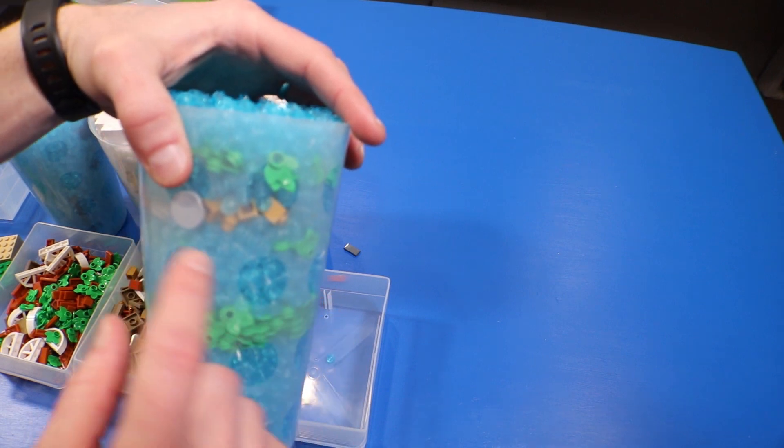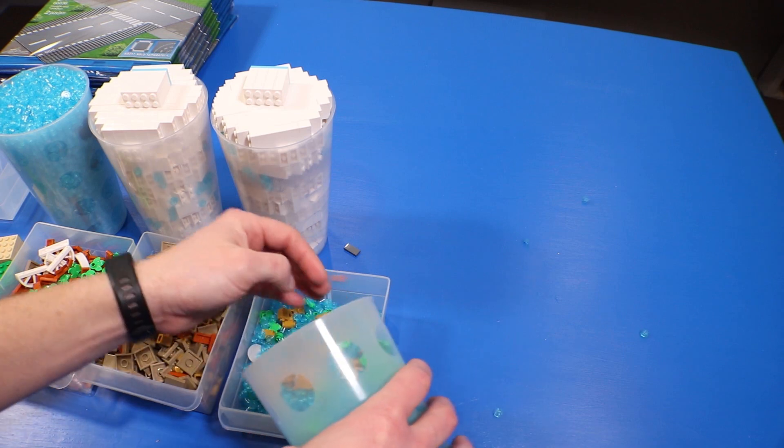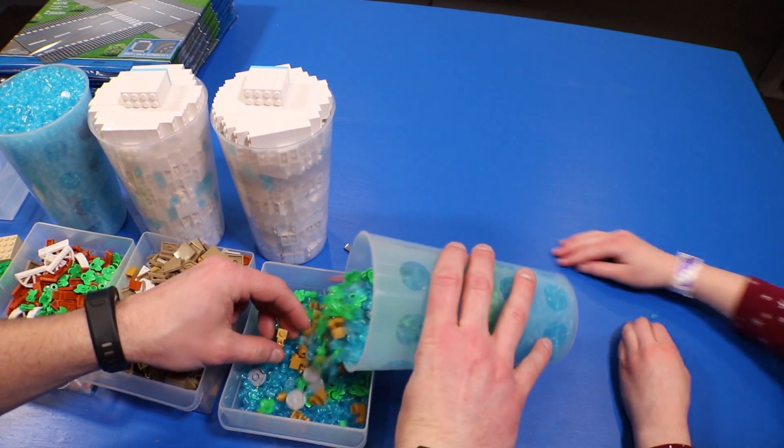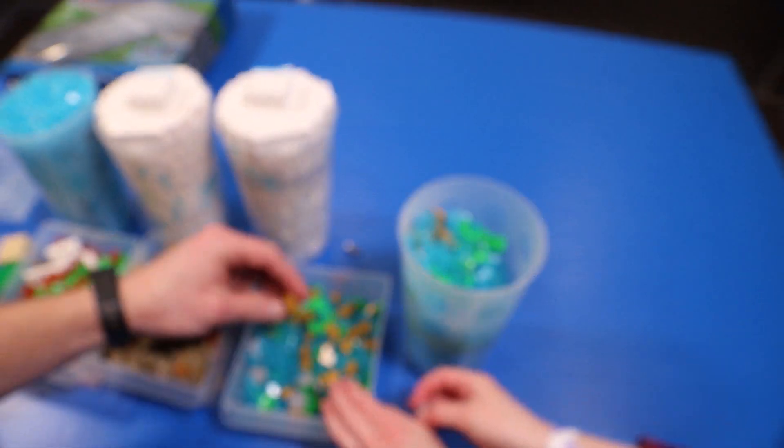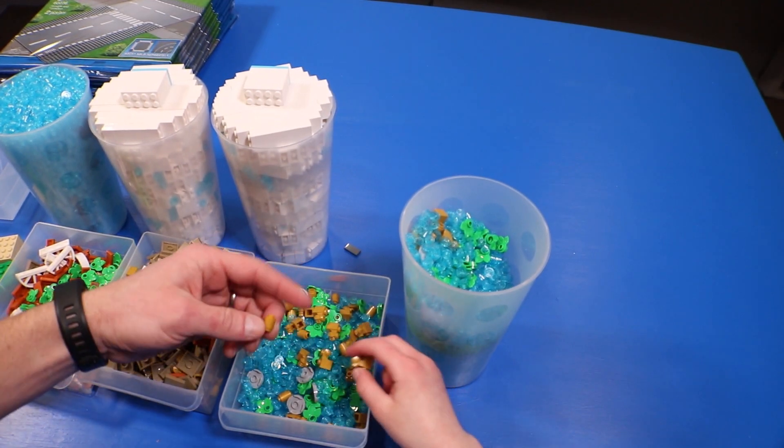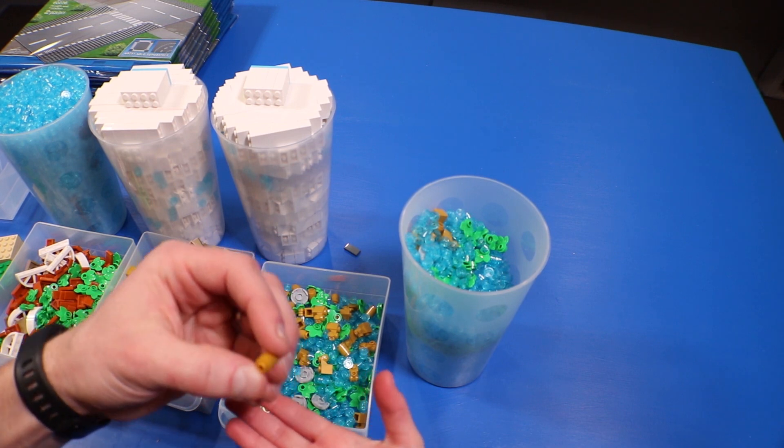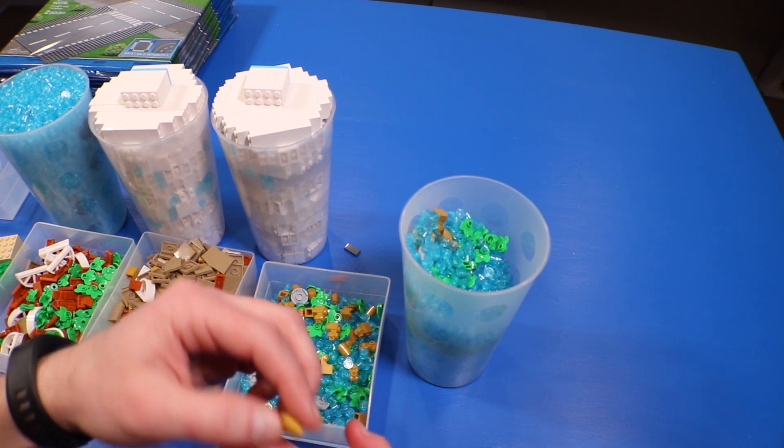So we've got the blue one by ones and we've got some green leaves, we've got a few other different layers in there. So here, let's see. All right, so yeah we just picked up some more of these - the gold one by one by one modifieds.